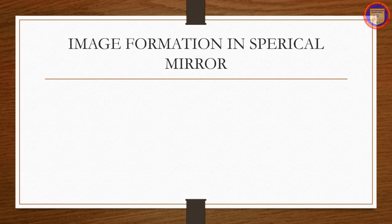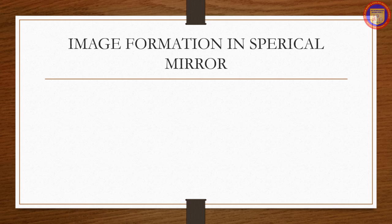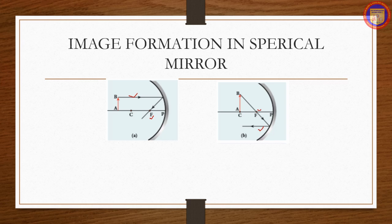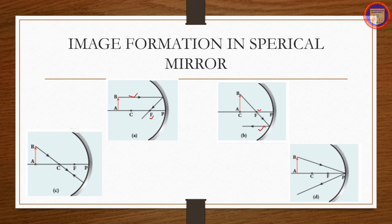Image formation in spherical mirrors follows these rules: a ray parallel to the principal axis after reflection passes through (or appears to pass through) the principal focus. A ray passing through the principal focus after reflection travels parallel to the principal axis. A ray passing through the center of curvature retraces its path after reflection, as it is a case of normal incidence. A ray falling on the pole gets reflected as per the law of reflection, keeping the principal axis as the normal.